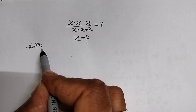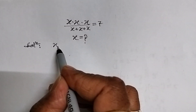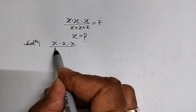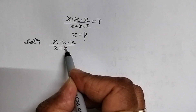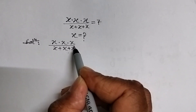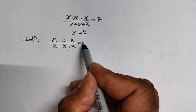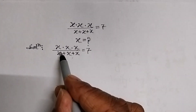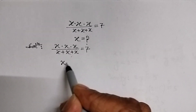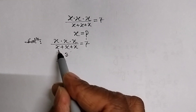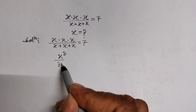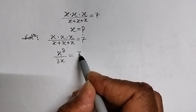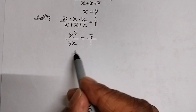First of all, we write the given equation: x into x into x, whole divided by x plus x plus x, is equal to 7. Now, x into x into x can be written as x cube, divided by x plus x plus x, which is 3x, equal to 7 divided by 1.